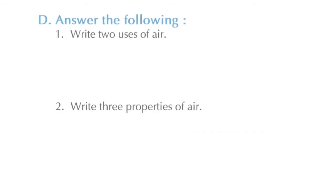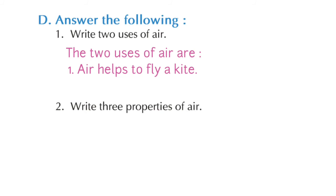Let's proceed to exercise D. Answer the following. Question 1. Write two uses of air. Answer. The two uses of air are: Number 1, air helps to fly a kite. Number 2, air helps to fly an aeroplane. Let's repeat. The two uses of air are: air helps to fly a kite, air helps to fly an aeroplane. Children, besides these two uses, you can write any two uses.